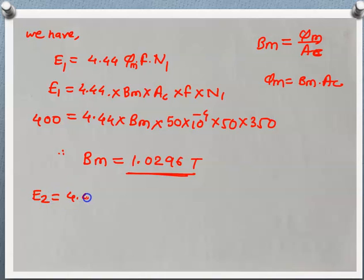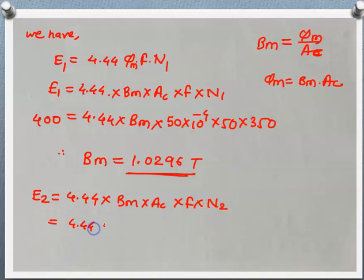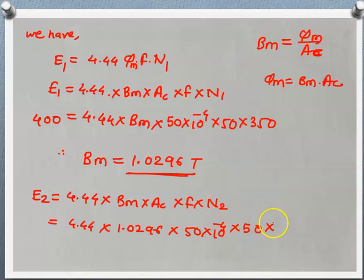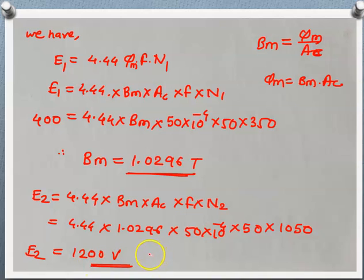For the second part, we want the voltage induced in the secondary winding. Using E2 = 4.44 · Bm · A · f · N2, we substitute: E2 = 4.44 × 1.0296 × (50 × 10⁻⁴) × 50 × 1050. We get E2 ≈ 1200 Volts. So approximately 1200 V is induced in the secondary winding. These are the required values for this problem.